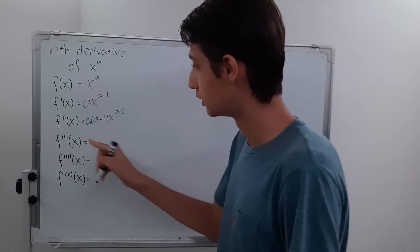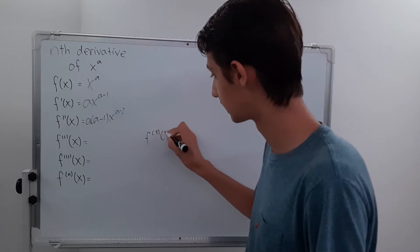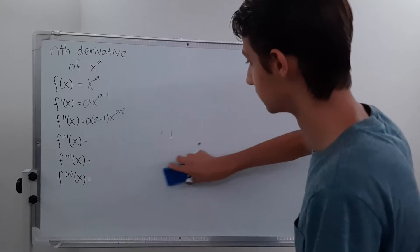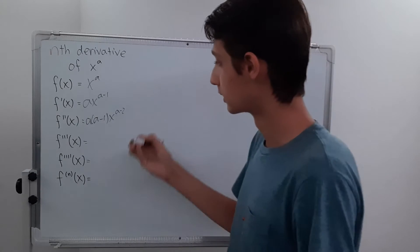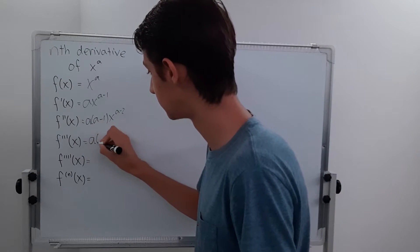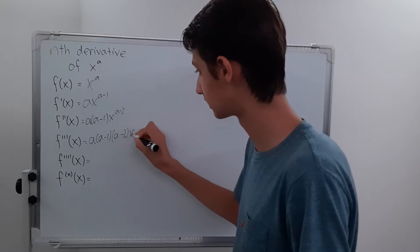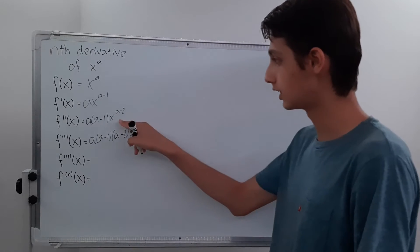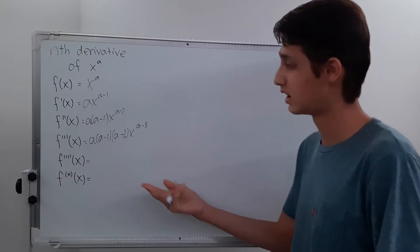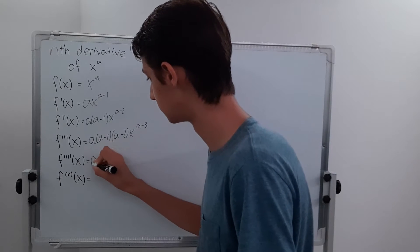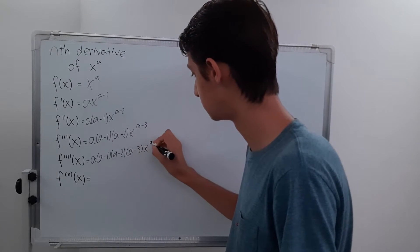Now our third derivative — denoted with three dashes, though you could also write f³(x) — is going to be a times a minus 1 times a minus 2, because that's our new coefficient, times x to the a minus 3. That's because the exponent a minus 2 gets another 1 subtracted to give a minus 3. And you can start to notice a pattern: the fourth derivative will be a times a minus 1 times a minus 2 times a minus 3 times x to the a minus 4.